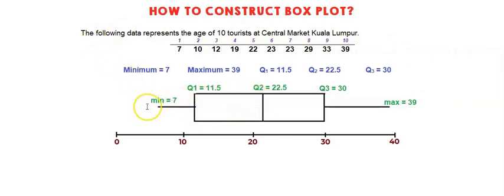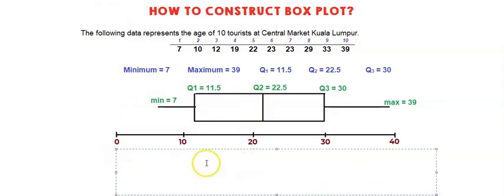If you look at this box plot, we can say that it is skewed to the left. We can see more data fall on the left-hand side. Based on this graph, it is skewed to the left.